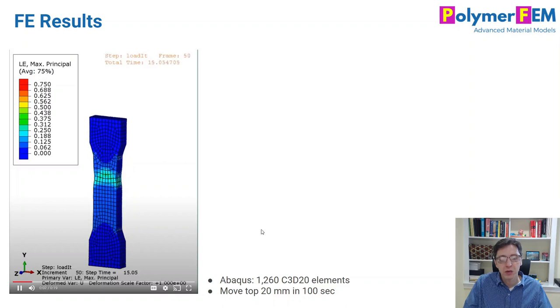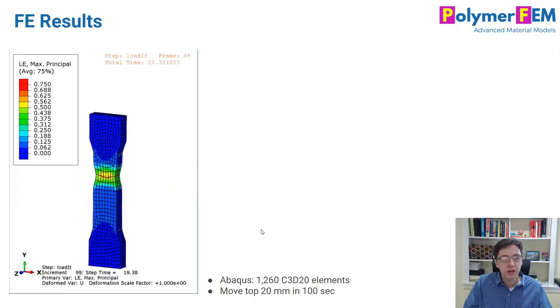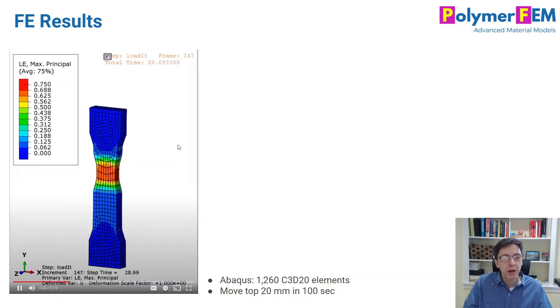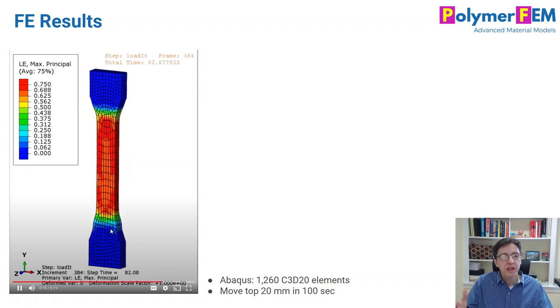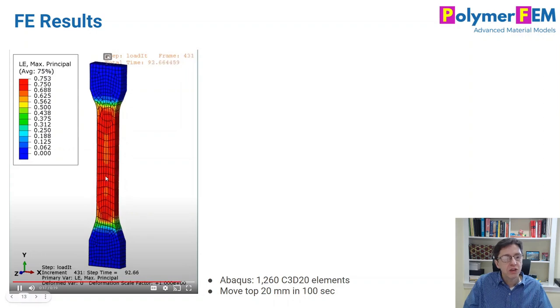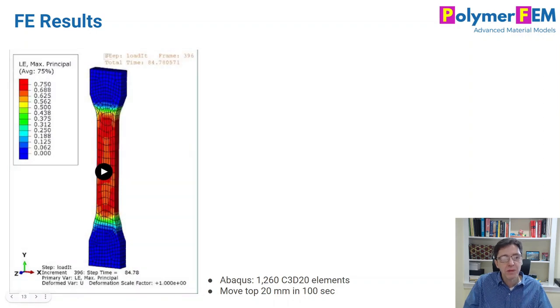I use quadratic C3D20 quadratic elements with a lot of integration points. I'm moving the top upwards a certain distance in 100 seconds. You can see the neck nicely just grows downwards until it hits the end. And then we also see that the strain inside the gauge section here stays about the same. That is the natural draw ratio of the material,